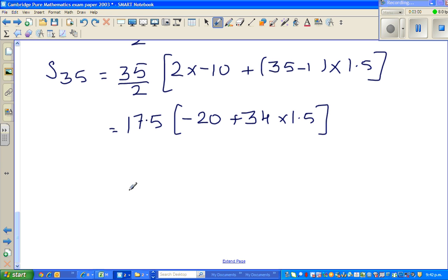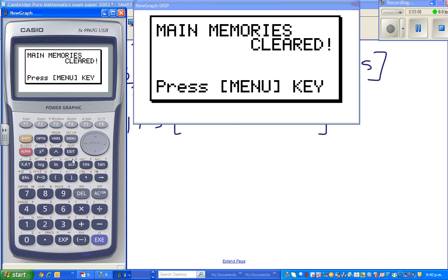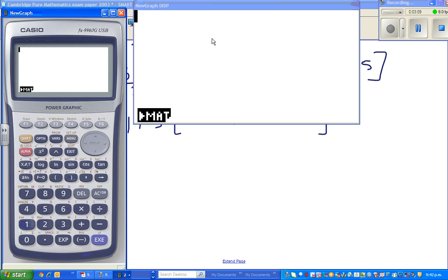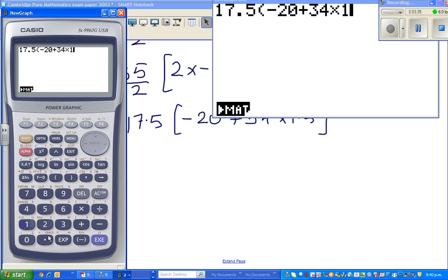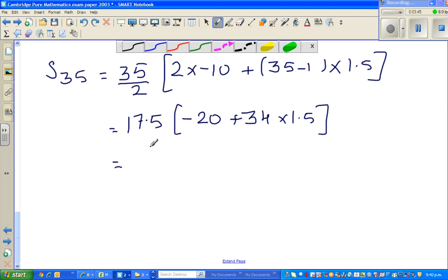I think from here, you can use the calculator. So let me open up my calculator. We want menu 1. So this is 17.5 bracket minus 20 plus 34 times 1.5, and close the bracket, which is 542.25. So the answer is 542.25.